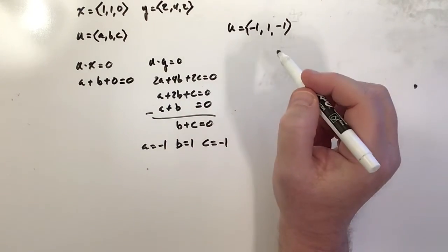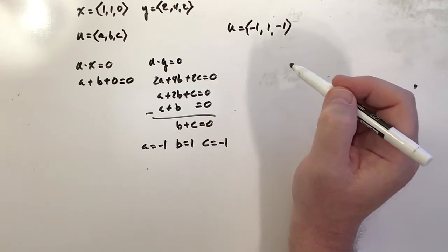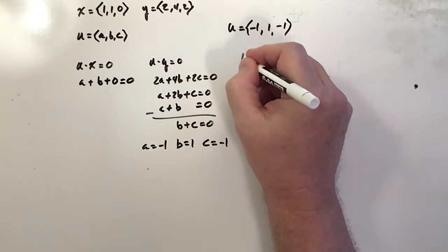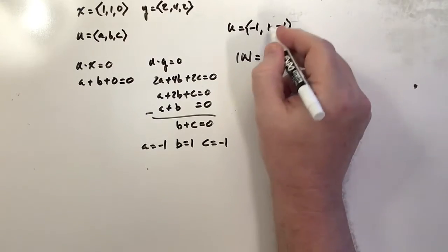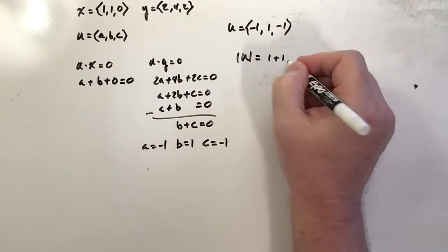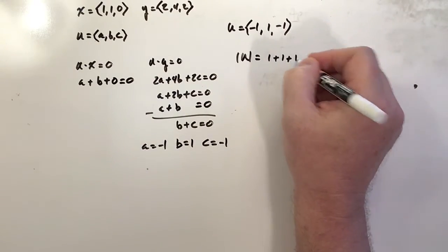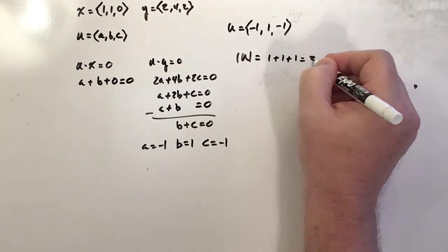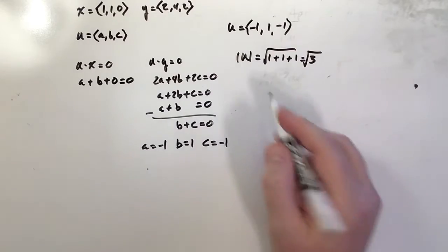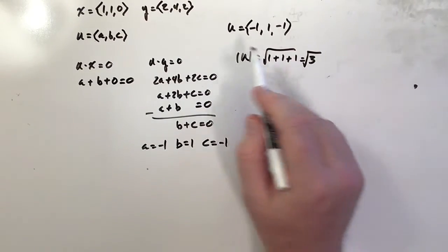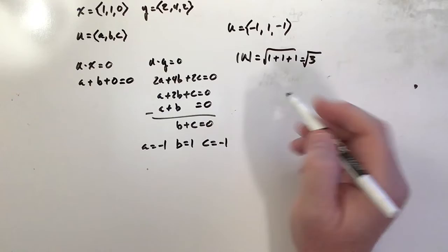So let's check the magnitude of u. The magnitude of u is going to be equal to 1 squared, which is 1, plus 1 squared, which is 1, plus 1 squared, which is 1. So that's 3, and of course it's the square root of the sum of the 3 components. So the magnitude of u is radical 3.